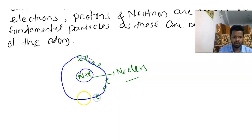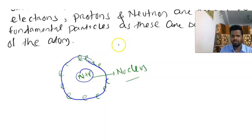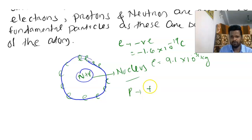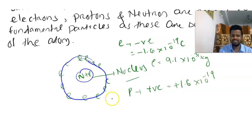The electrons revolve around the nucleus like planets revolve around the sun. Inside the nucleus we get neutrons plus protons. The charge of an electron is negative, equal to minus 1.6 × 10⁻¹⁹ coulombs, and the mass of an electron is equal to 9.1 × 10⁻³¹ kg. The charge of a proton is positive, equal to plus 1.6 × 10⁻¹⁹ coulombs.